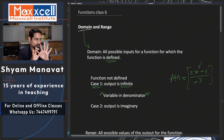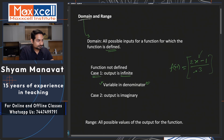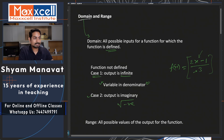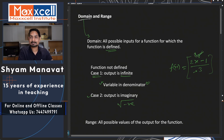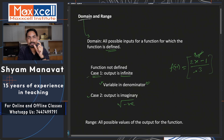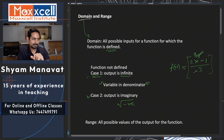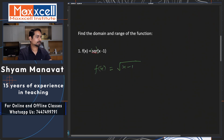Case 2: output is imaginary. That is possible only when you have a square root sign. If there is no square root sign, then case 2 does not apply. So to check case 1, see whether you have a variable in the denominator. For case 2, see whether you have a square root sign. In our question number 1, we have a square root sign, so case 2 is applicable.